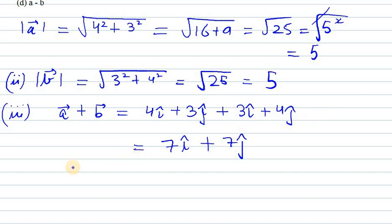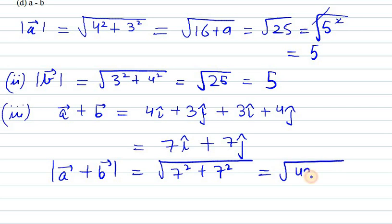Now we need to find the magnitude of it. So a vector plus b vector gives us under root 7 square plus 7 square. So under root 49 plus 49 that is 98 or you can write it as 7 under root 2.